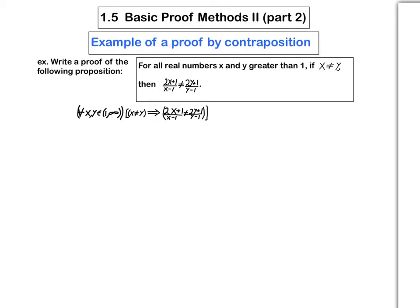So it says, for all x and y greater than 1, if x is not y, then 2x plus 1 over x minus 1 is not 2y plus 1 over y minus 1.